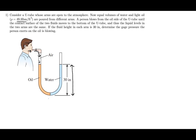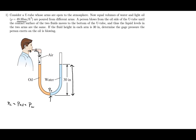One approach is to recognize that at the contact point between the oil and water — call it PC — the pressure of the oil equals the pressure of the water. So we can write: the pressure of the oil equals the pressure of the water. The pressure of the oil equals the pressure the person is blowing, PB, plus the density of the oil times gravity times the height of the oil.